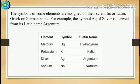The symbols of some elements are assigned based on their scientific or Latin, Greek, or German name. For example, the symbol Ag for silver is derived from its Latin name Argentum. Hydrogen's Latin name is Hydrogenium. Potassium is symbol K from the Latin name Kalium. Silver is Ag from Argentum. Sodium is Na from Natrium.